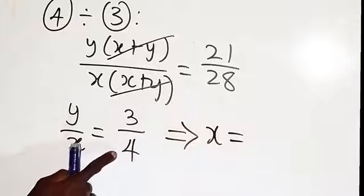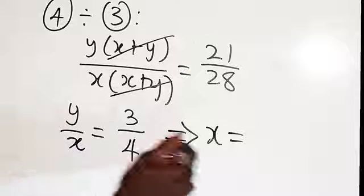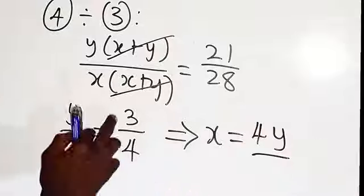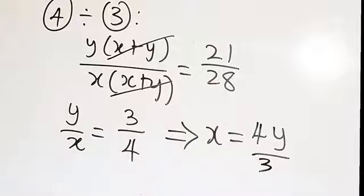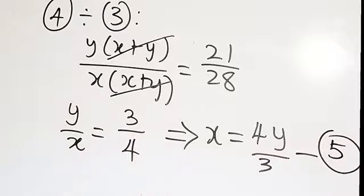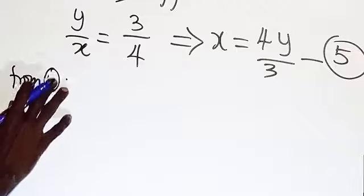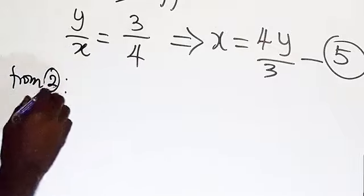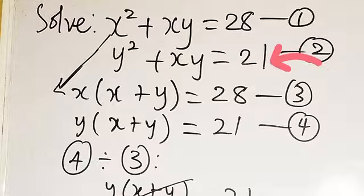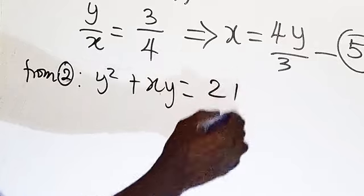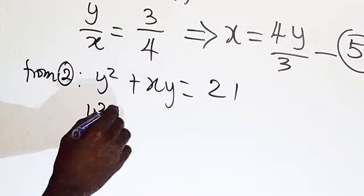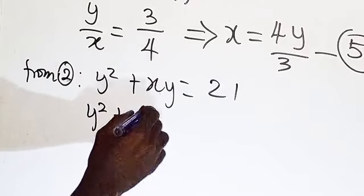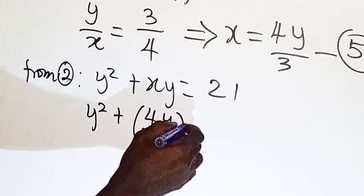Making x the subject: multiply across to get x equals 4y over 3. Label this equation 5. Now substitute into equation 2: y squared plus xy equals 21, replacing x with 4y over 3.